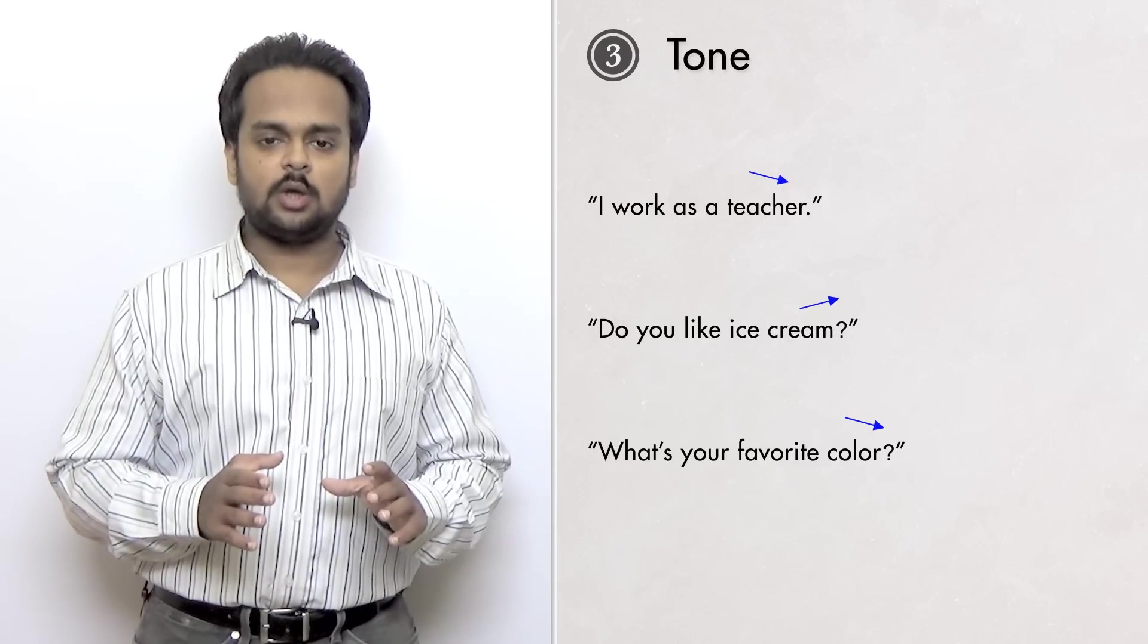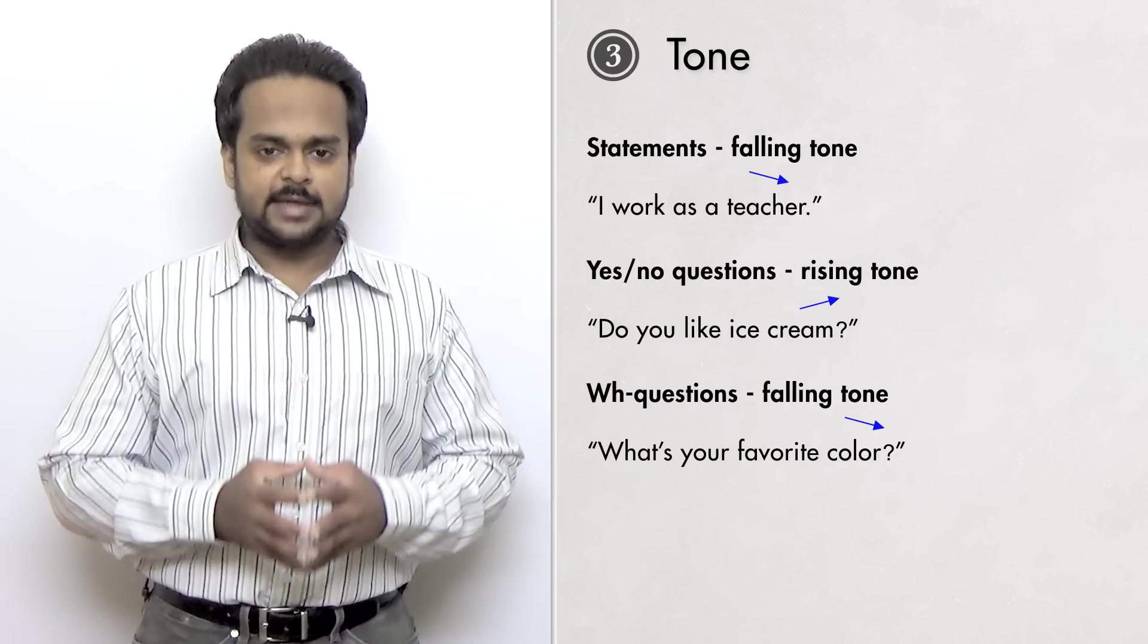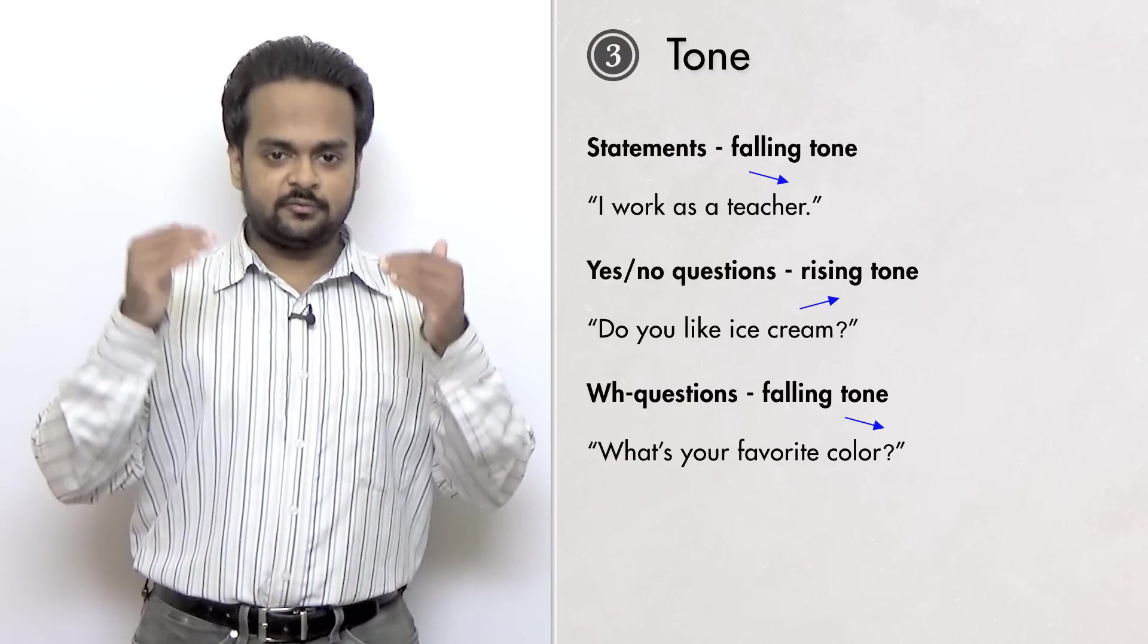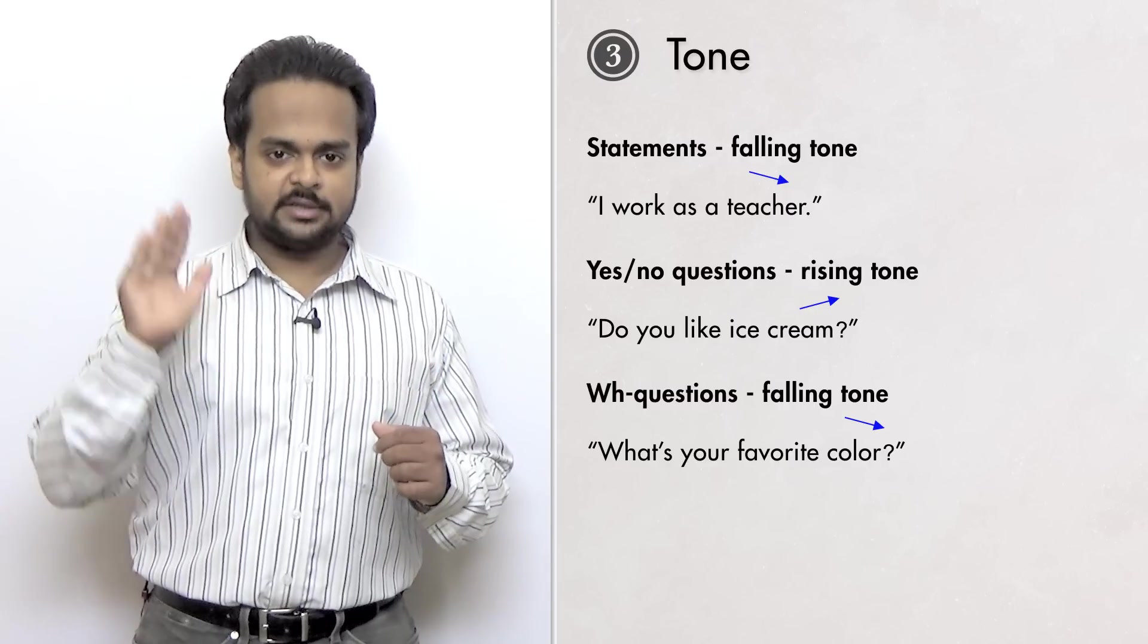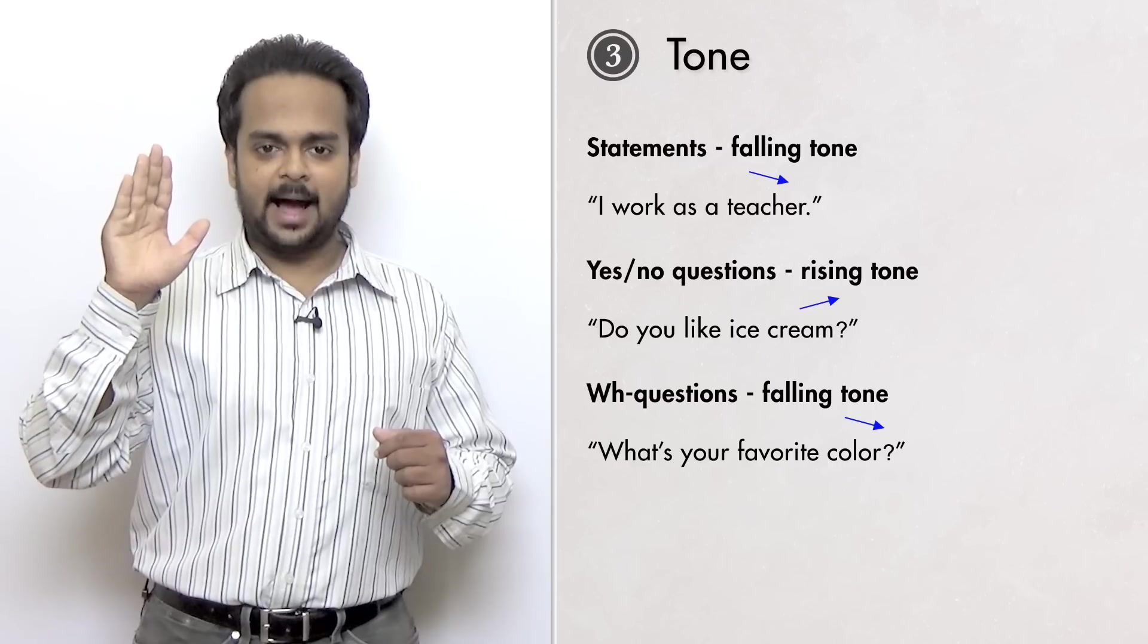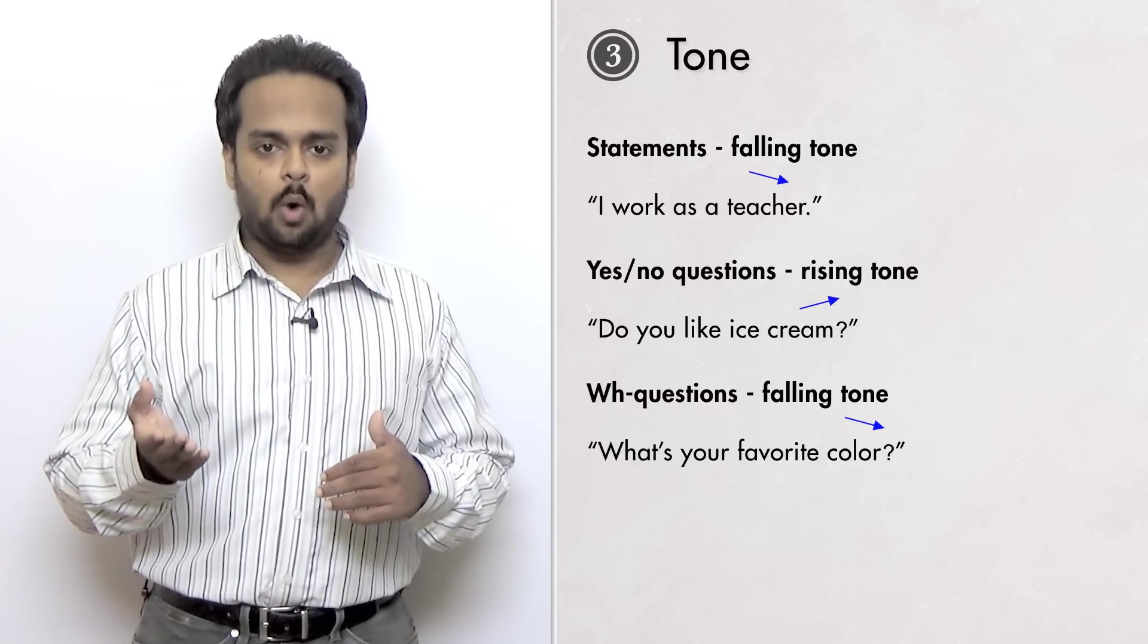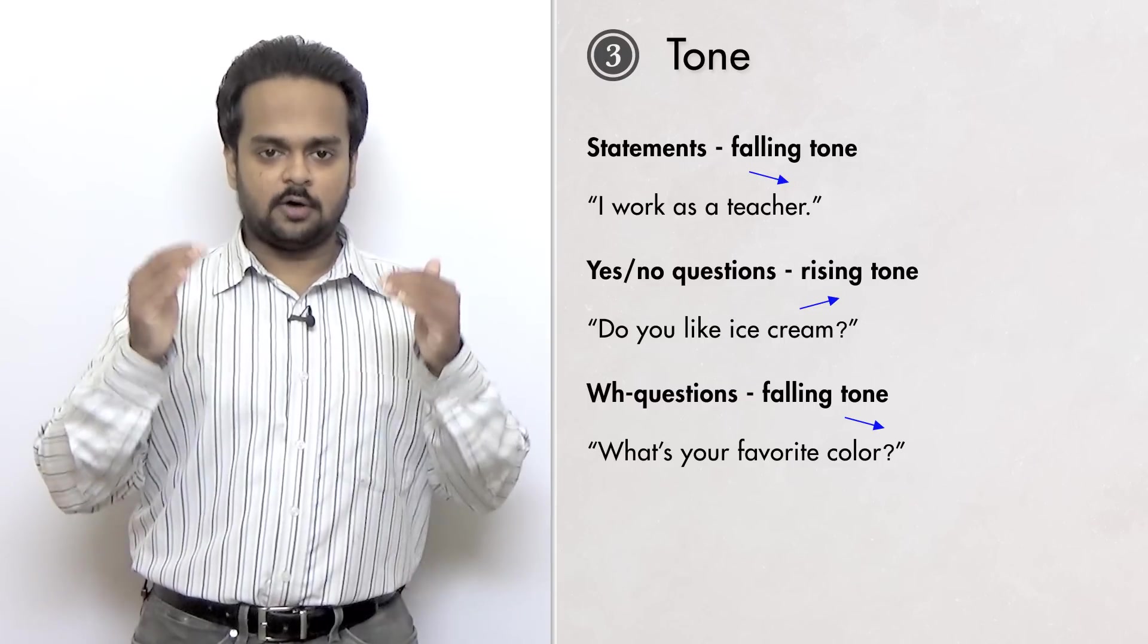These three sentences show us the three main rules for intonation in English. Statements, or affirmative sentences, are usually said with a falling tone. Yes or no questions are said with a rising tone, and questions that ask for information with question words like who, what, when, where, why, and how normally have a falling tone.